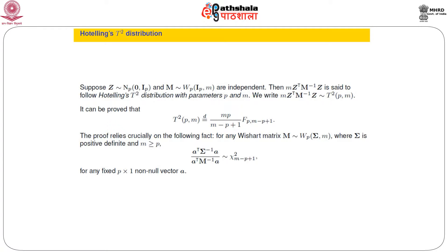We are discussing inference about the mean vector with no restriction on mean. We said that we shall have occasion to talk about hypothesis testing problems, but there is also a case with a linear restriction, which we are not going to discuss now—it will come later. In the process, we have seen an expression for the likelihood ratio statistic and an equivalent Hotelling T-square distribution, which is very much analogous to the univariate quantity.